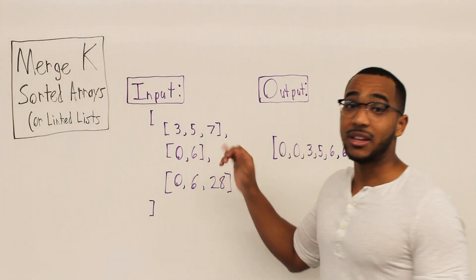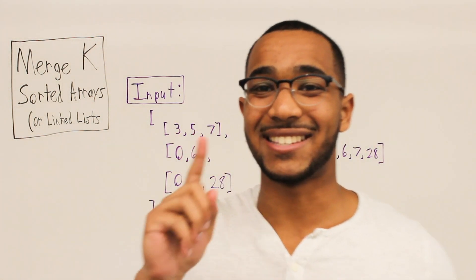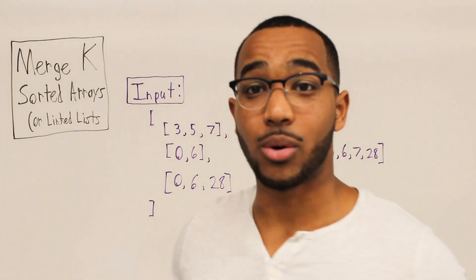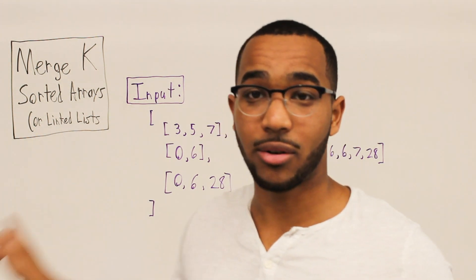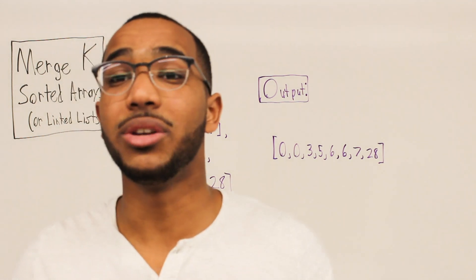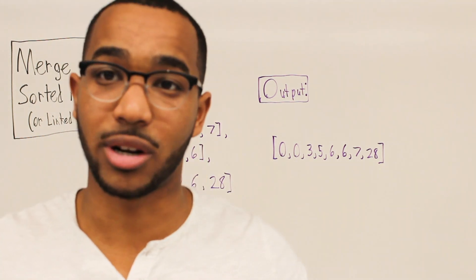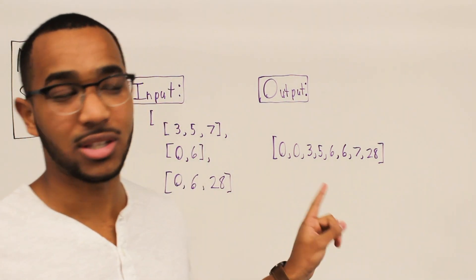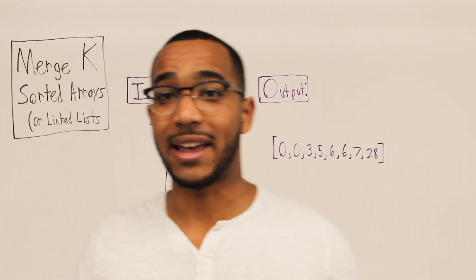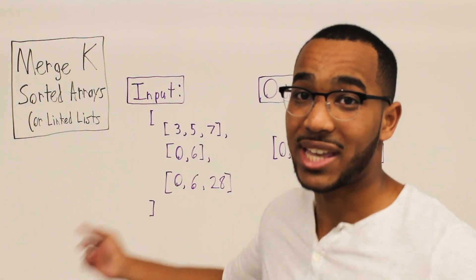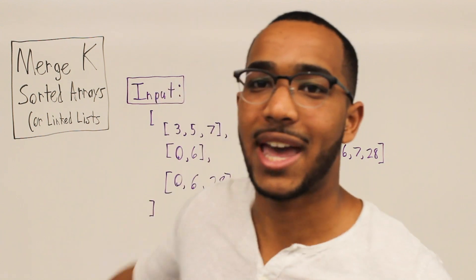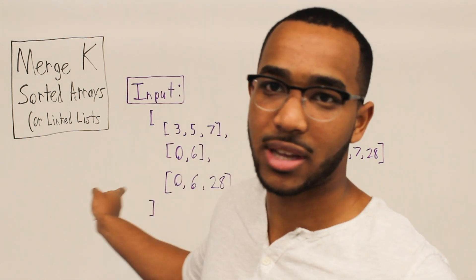Our input is going to be three sorted arrays. This is key — it's not a coincidence they're sorted. And what we're going to do is calculate the union between these sorted arrays as another sorted sequence. So we're going to output a sorted array from the three sorted arrays we get. We're going to get k sorted arrays; k is three in this case.